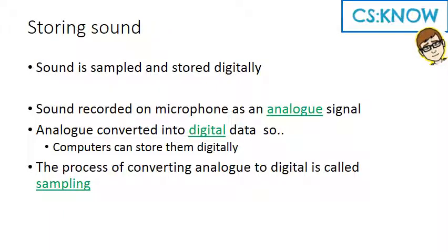So for sound to be recorded and stored on a computer, it has to be sampled. The problem is that sound is an analogue wave, but the analogue gets converted into digital data so that computers can store it. Because obviously computers can only store digital in zeros or ones. So the process of converting an analogue wave or an analogue entity to digital is called sampling.